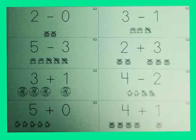What is the answer to these addition and subtraction problems? 2 minus 0 equals 2. 3 minus 1 equals 2. 5 minus 3 equals 2. 2 plus 3 equals 5. 3 plus 1 equals 4. 4 minus 2 equals 2. 5 plus 0 equals 5.